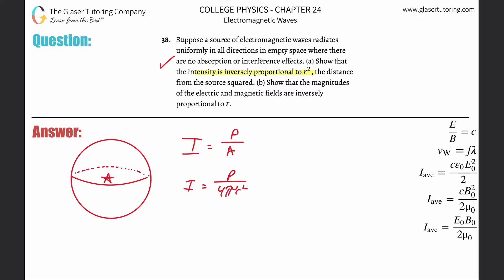Check. Letter B. Show that the magnitudes of electric and magnetic fields are inversely proportional to r.